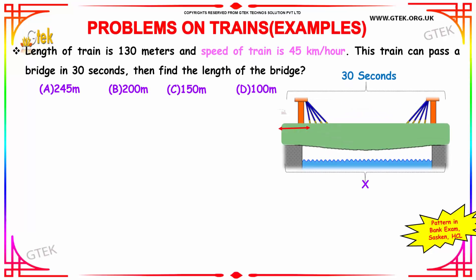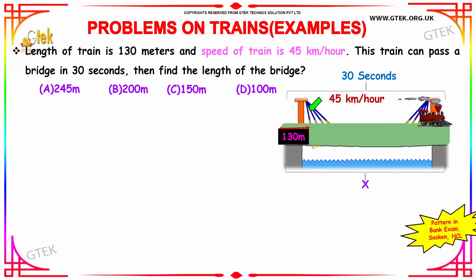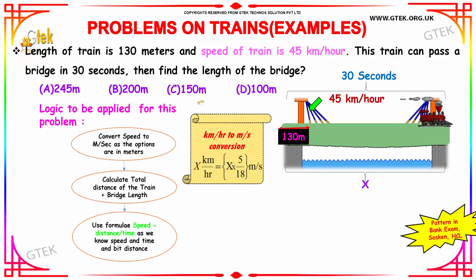One of the most interesting problems is finding the length of the bridge. The length of the train is 130 meters, the speed of the train is 45 kilometers per hour, and the train crosses the bridge in 30 seconds. These are the options available.